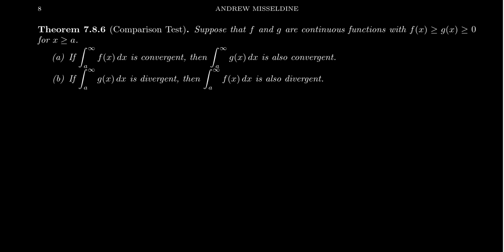Suppose we have two continuous functions f and g with the property that f is always greater than or equal to g. They're both positive functions on the interval x is greater than or equal to a. So we have some comparison about the functions: f is bigger than g.